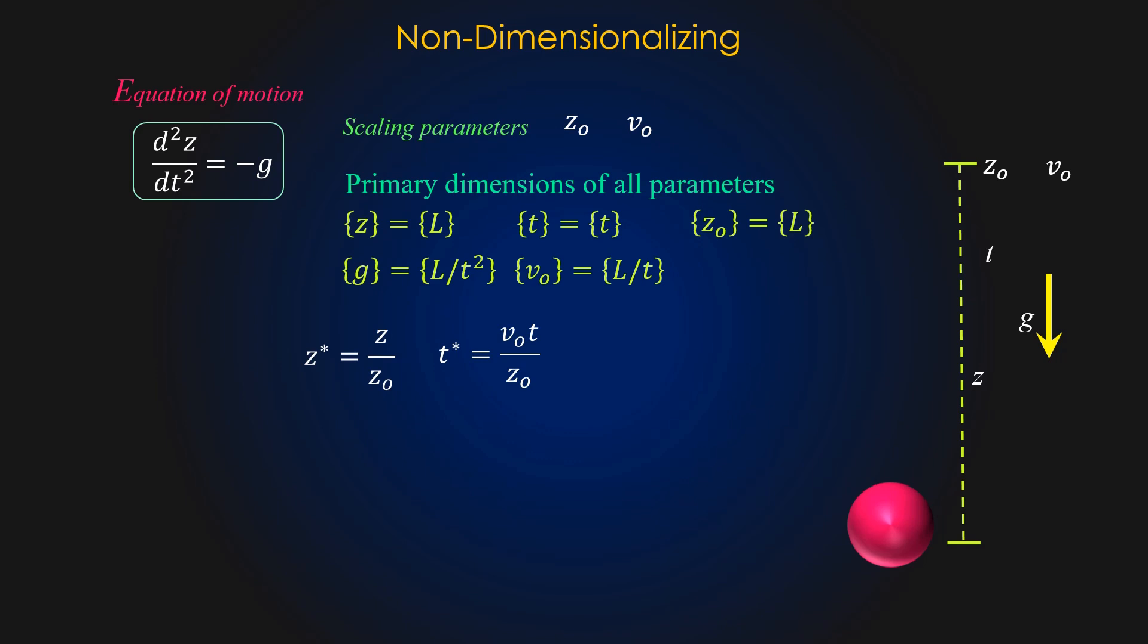Substituting the value of z and t in the equation of motion we can write as, on further simplifying we can write as, now equation of motion can be written as